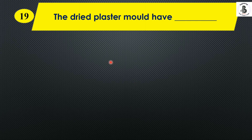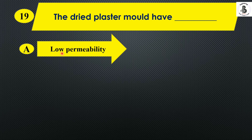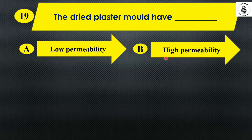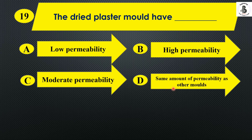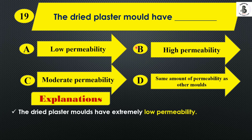Question 17: The dried plaster mold has — Option A: low permeability. Option B: high permeability. Option C: moderate permeability. Option D: same permeability as other molds. In the dry plaster mold process, the plaster mold has low permeability. So the right answer is Option A.